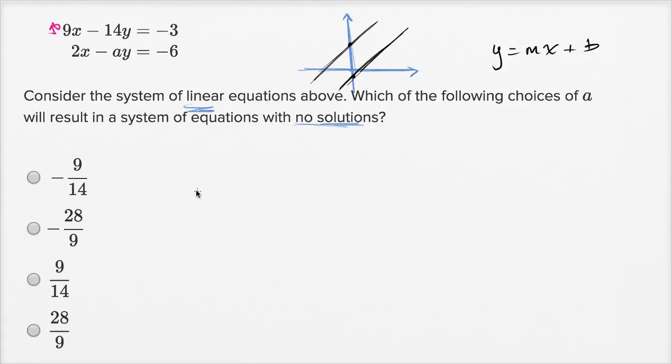So first I'll do this one up here. So you have 9x minus 14y is equal to negative three. If I subtract 9x from both sides, I would get negative 14y is equal to negative 9x minus three. If I divide both sides by negative 14,